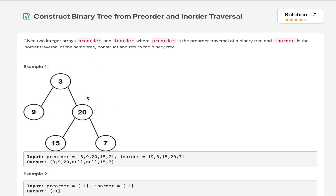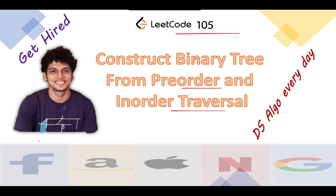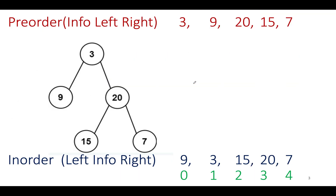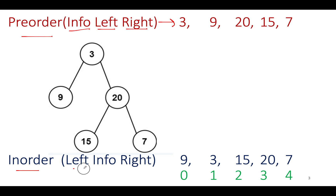Let's look at the presentation for LeetCode 105: Construct Binary Tree from Pre-order and Inorder Traversal. In pre-order traversal, we visit the current node first, then its left child, then its right child — node, left, right. In the example, the pre-order traversal is given as 3, 9, 20, 15, 7. For inorder traversal, we visit the left child first, then the current node, then the right child — left, node, right.